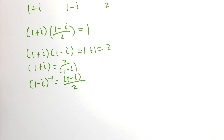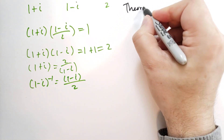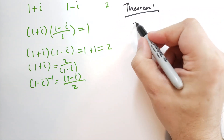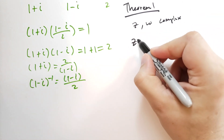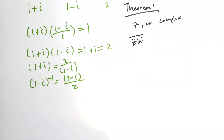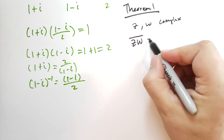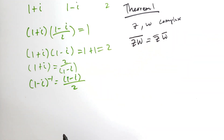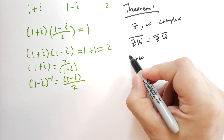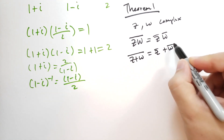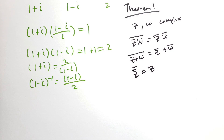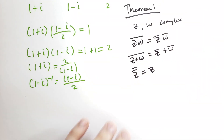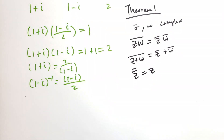Theorem 1: Let Z and W be complex. Then the conjugate of Z times W is the same as the product of their conjugates. Also, the conjugate of Z plus W equals the sum of their conjugates. And if you take the double conjugate, you get the original number back. We're not going to prove this — it's rather trivial, and he leaves it as an exercise. Go ahead and convince yourself of that.